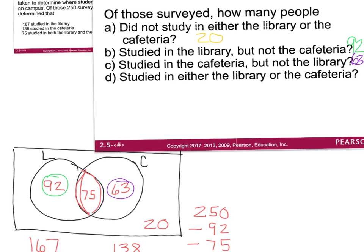Last question: how many studied in either the library or the cafeteria? That means they could have been library only, both library and cafeteria, or just cafeteria. Adding those three groups — 92, 75, and 63 — together gives 230 people.